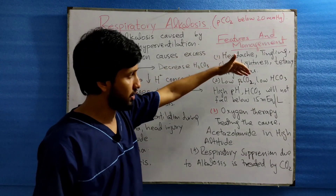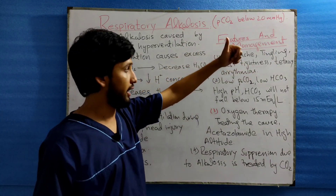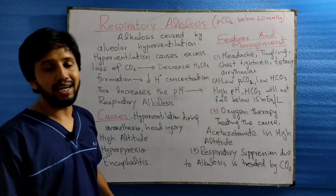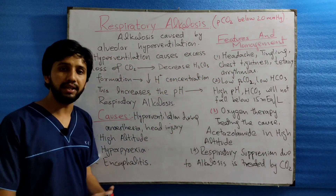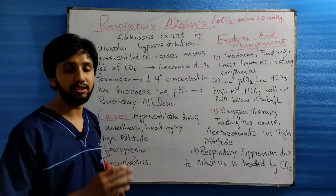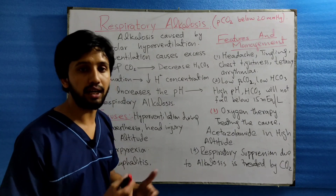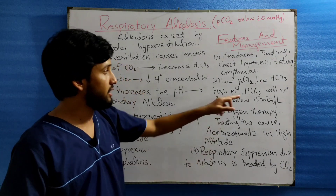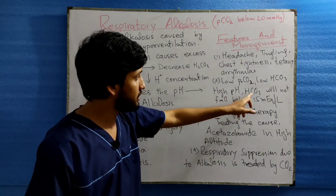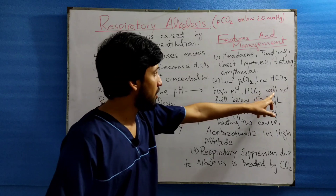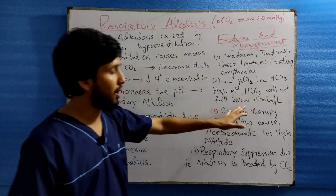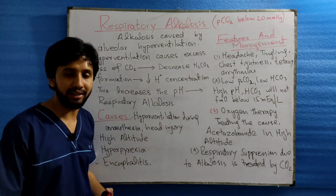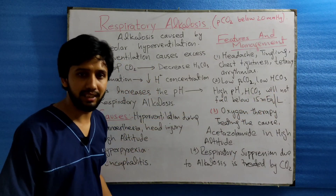This low PCO2 and low HCO3 will result in a high pH — that is, an increased alkaline pH of the body. The HCO3 will not fall below 15 mEq/L in the serum.